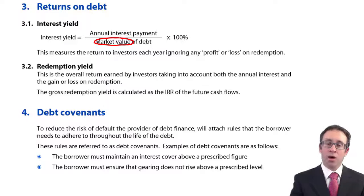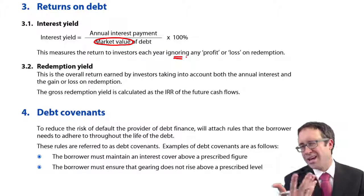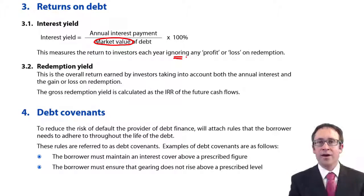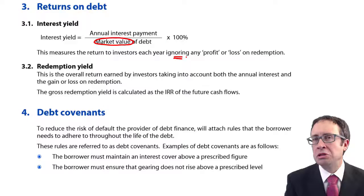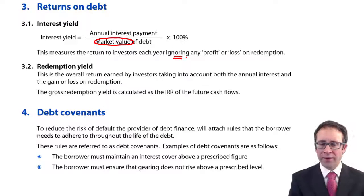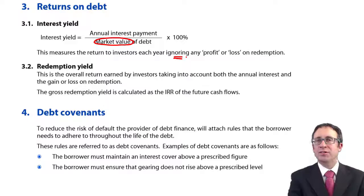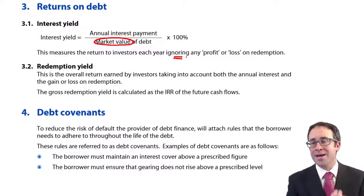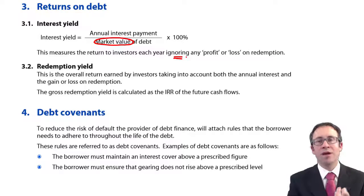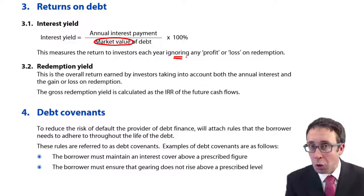However, be aware that the interest yield ignores any profit or loss — likely to be a profit — that you generate on redemption. For example, if you look at an interest yield on your zero coupon bonds, it's zero, because you have no annual interest. It doesn't matter what the market value of the debt is — your interest yield is zero. But we're still getting a return on the debt, because there will be a big gain on redemption of that zero coupon bond at the end of its life.